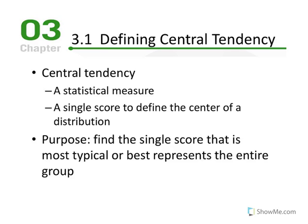When we refer to scores, we can apply all four scales of measurement — nominal, ordinal, interval, or ratio — and the type of scale will determine whether we use the mean, median, or mode. The score is simply the variable X. If you understand the purpose of a particular statistic, you will master its function. The purpose of a measure of central tendency is to find a single score that is most typical or best represents the entire group.